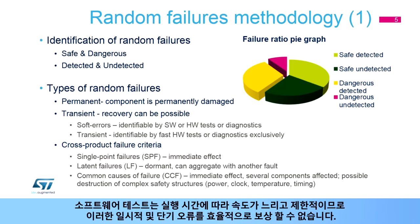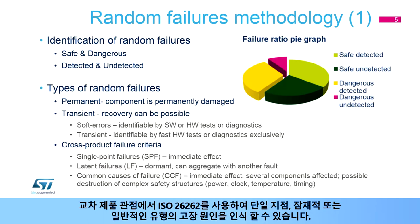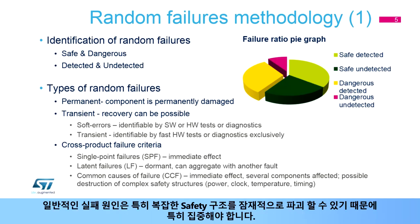Software tests can never compensate for these temporary and short-lived errors efficiently, as they are considerably slower and limited by their execution time. From a cross-product point of view, using ISO 26262 terminology, we can recognize single point, latent, or common types of failure causes. Common causes of failure require a special focus, especially as they can potentially destroy even quite complex safety structures.